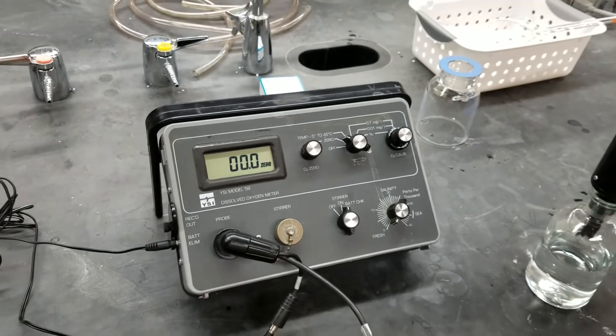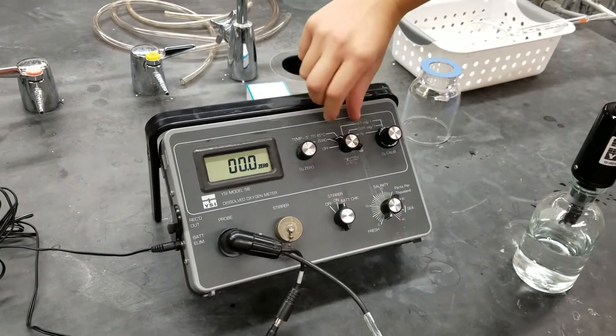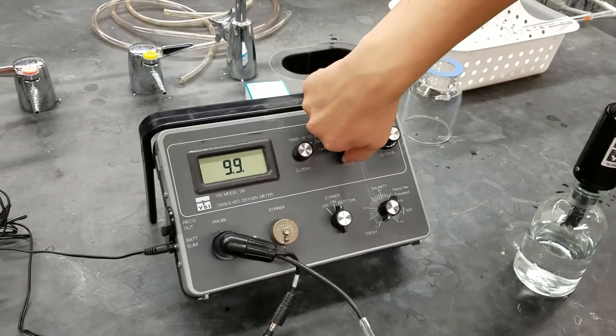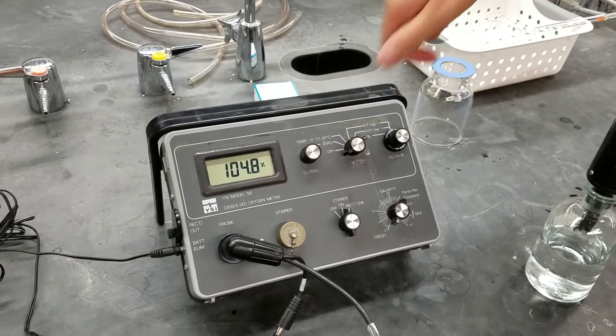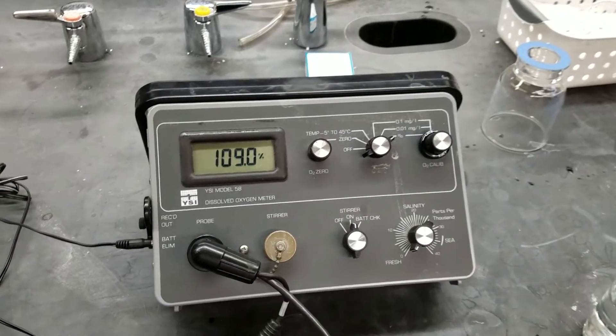And then the other thing we need to do to calibrate it is flip this knob over to the percent setting. And we want this percent to be 100.